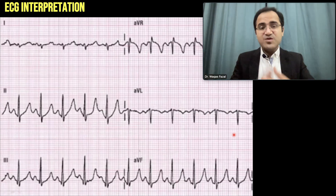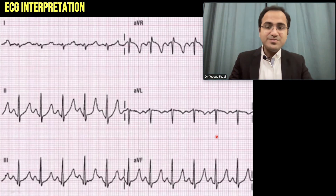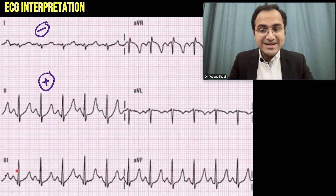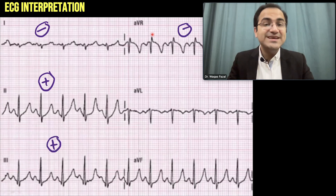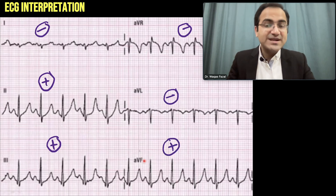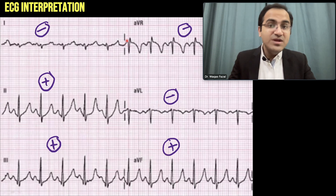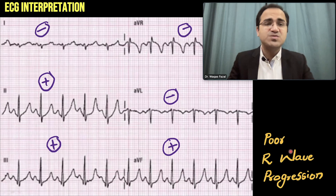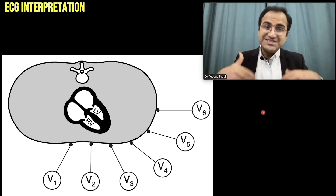Pause the video and look at the R wave progression in this ECG. In this ECG, lead 1 shows negative deflection, lead 2 shows positive deflection, and lead 3 shows positive deflection. Lead AVR shows negative deflection, which is normal. However, lead AVL shows negative deflection and lead AVF shows positive deflection. Normally only AVR should have negative deflection, but here lead 1 and AVL are showing negative deflections — so this is poor R wave progression.